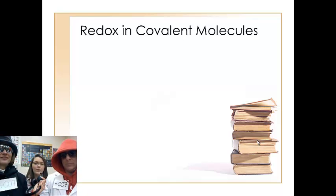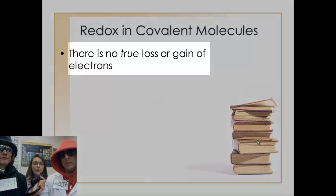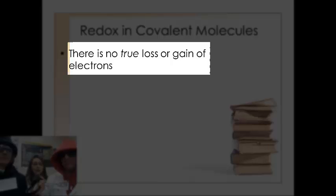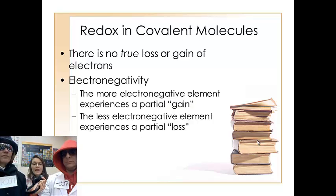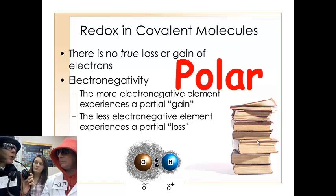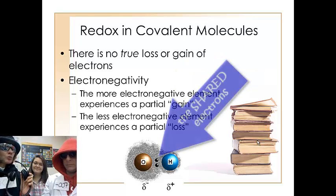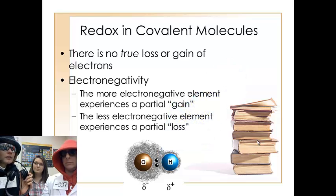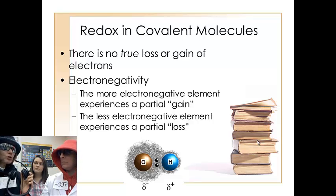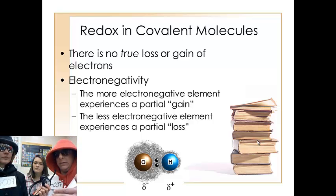Slightly different than our ionic compounds, when reduction and oxidation — redox — occur in covalent molecules, we have to remember that there's no true loss or gain of electrons, because in a covalent compound or molecule they're sharing those electrons together. So electronegativity comes into play. If something's more electronegative — for example, fluorine — it's going to have a partial gain of that electron, and the less electronegative element it bonds with is going to have a partial loss of electrons. That forms what we call a polar covalent bond, where the electron doesn't truly move over to the shell of the more electronegative nonmetal, but hangs out in its electron cloud — as opposed to an ionic compound where electrons actually move from the metal to the nonmetal.